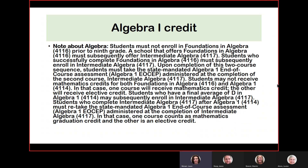The Algebra 1 credit rules are extremely important. Students must not enroll in a Foundations in Algebra course prior to 9th grade. A school that offers Foundations in Algebra must offer Intermediate Algebra right after it. If they complete Foundations in Algebra successfully, they must enroll in Intermediate Algebra. If a student fails Foundations in Algebra, do not schedule them for Intermediate Algebra until they pass. A student may not get credit for both Foundations in Algebra and Intermediate Algebra — one must be an elective credit. The end-of-course test for Algebra 1 must be administered at the completion of the second course, Intermediate Algebra.